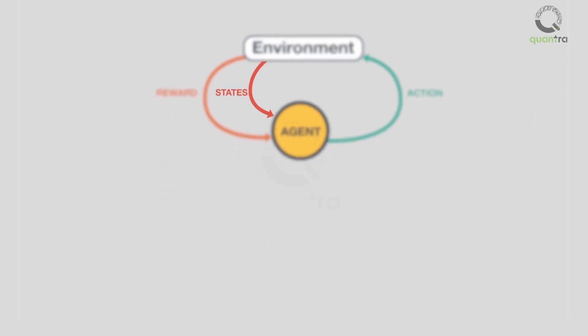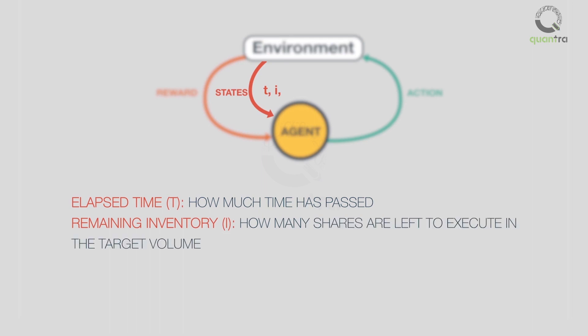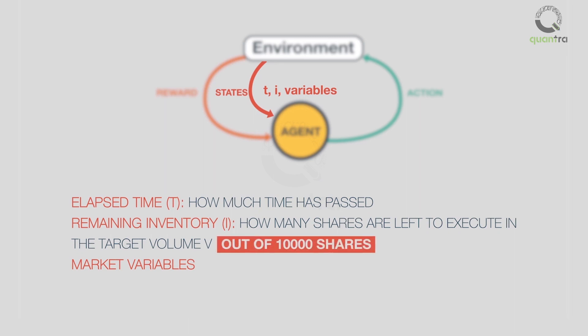Every state has a number of attributes that describe the current configuration of the system. Different important attributes are: elapsed time t — how much time has passed; remaining inventory i — how many shares are left to execute in the target volume; market variables which compute various properties of interest in the limit order books; and recent activity in the stock. For our example, the state will tell us how many shares out of 10,000 and how much time out of two minutes are left.